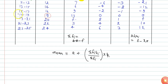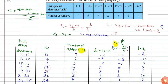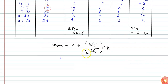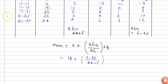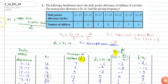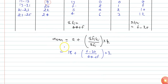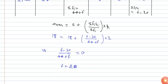The mean can be calculated using the formula: a plus (summation of Fi·ui divided by summation of Fi) multiplied by h. The assumed mean a is 18, so: 18 plus (f minus 20) divided by (44 plus f) times 2. Since the mean pocket allowance is given as 18 rupees, I can write 18 equals 18 plus that expression. From here I get f minus 20 divided by 44 plus f equals 0, which gives f equals 20. So the missing frequency is 20.